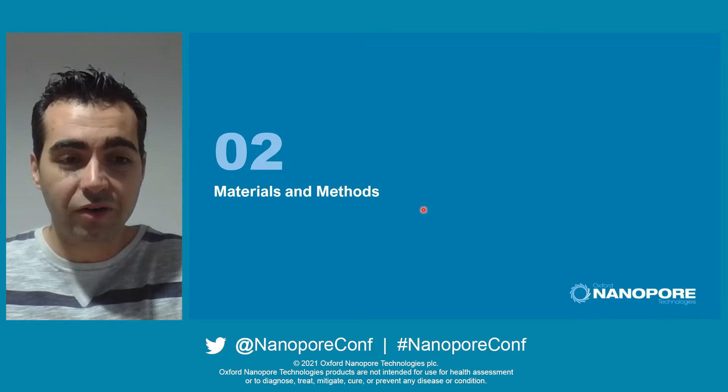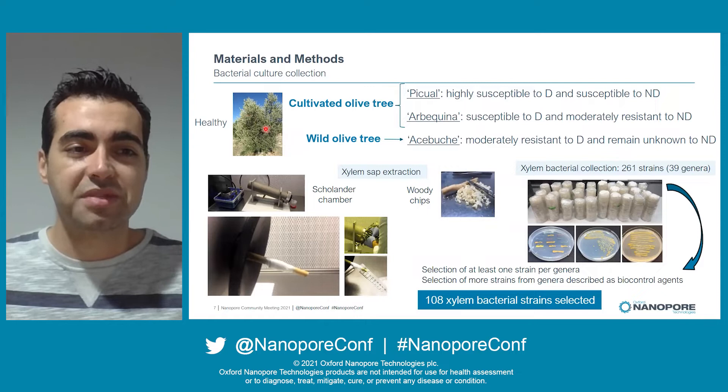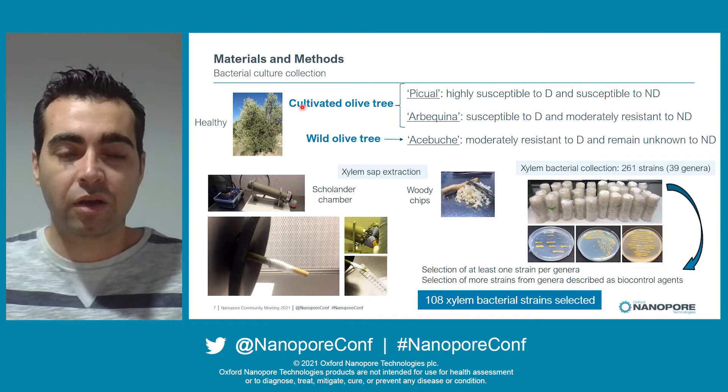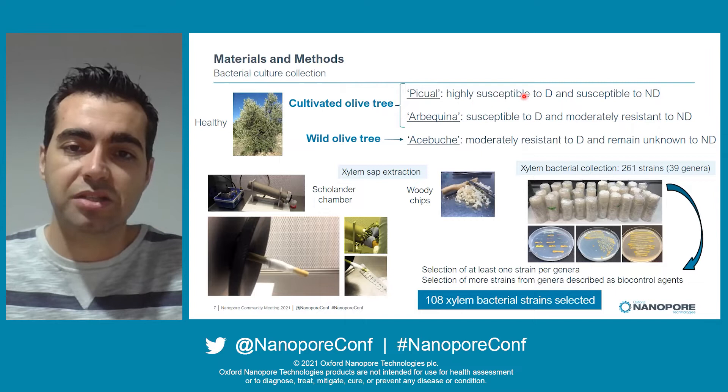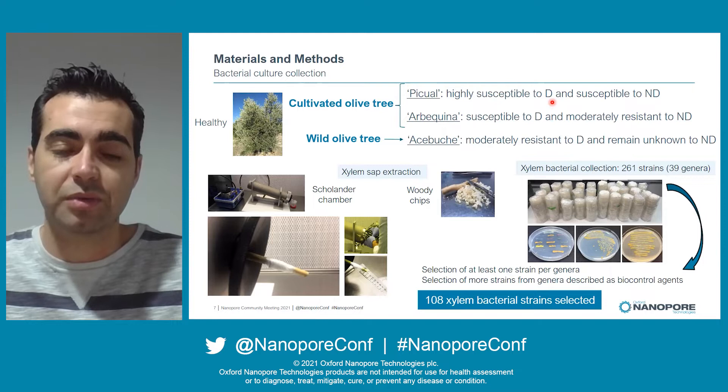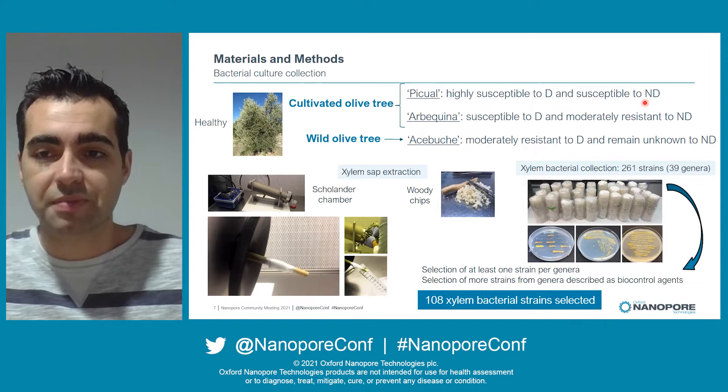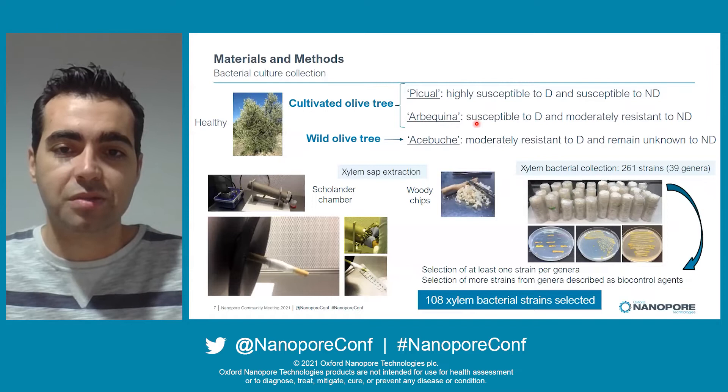According to the materials and methods section, we started by obtaining a bacterial culture collection from healthy olive trees — cultivated olive trees and wild olive trees. We selected P1, which is highly susceptible to the defoliating pathotype of Verticillium dahliae, which is more severe and has major virulence, and susceptible to the non-defoliating. Also, we selected Arbequina, which is susceptible to the defoliating and moderately resistant to the non-defoliating pathotype.